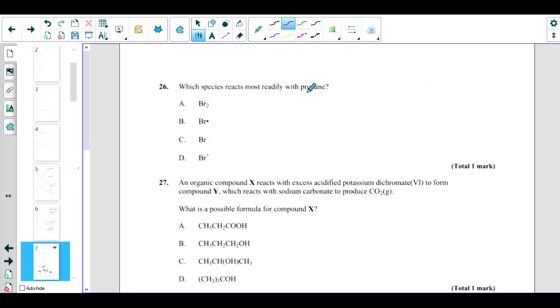Which species reacts most widely with propane? So there is a reaction which alkanes do, that is free radical substitution. This is the free radical, so what will be the correct answer? Alkane will react with it.